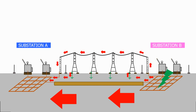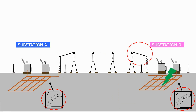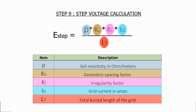When a fault occurs inside a substation, the ground beneath the substation will rise to a high voltage, and we look at what impact this has on all of the remote end substations.